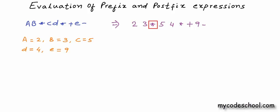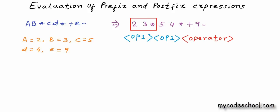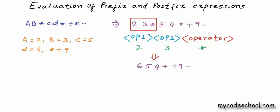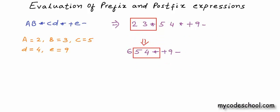In postfix expression, operands of an operator will always lie to its left. For the first operator, the preceding two entities will always be operands. You need to look for the first occurrence of the pattern operand-operand-operator in the expression, and then you can apply the operator on these two operands and reduce the expression. After evaluating 2 asterisk 3, we repeat this process till we are done with all the operators — scanning from left to right and looking for the first occurrence of operand-operand-operator.